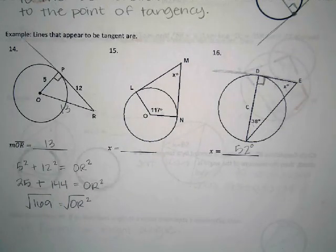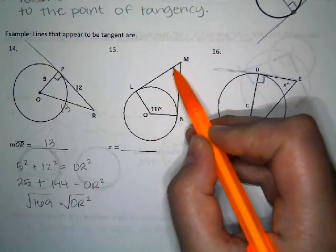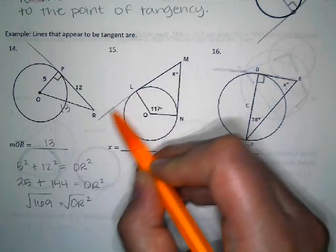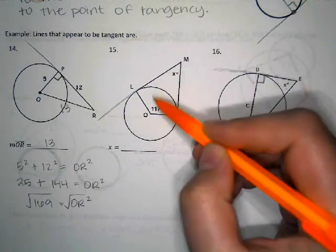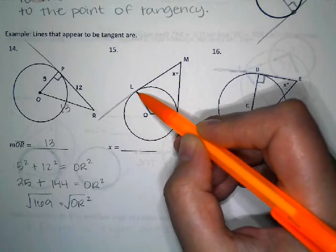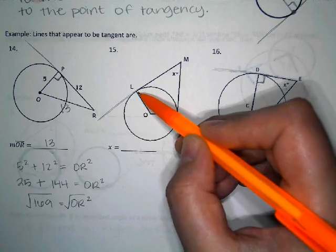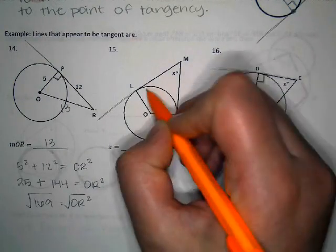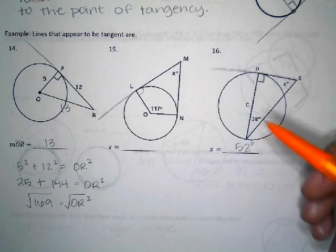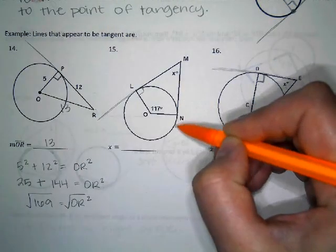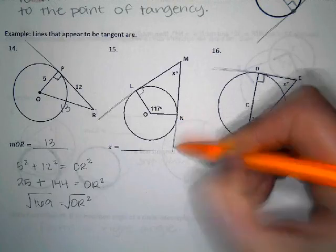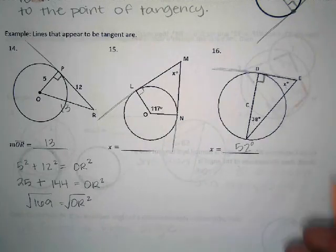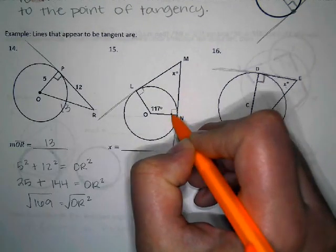We're going to go back to this. We have this line right here - I'm going to keep drawing this - this is a tangent line. This is a radius that's hitting the tangent line at the point of tangency. Do you guys remember what angle that makes? It makes a 90-degree angle. And then over on this side, here is another tangent line and another radius that hits the tangent line at the point of tangency, so it makes another 90-degree angle.